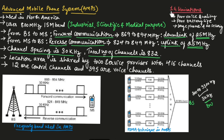There are a few limitations in first generation cellular communication: poor voice quality, poor battery life, the need to use large phones, no security for voice communication, and limited capacity. This is about first generation cellular communication system. Hope you have understood the topic. Thank you.